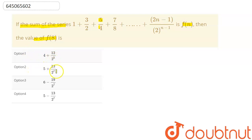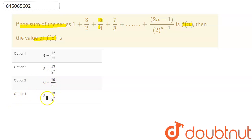option 2 is 5 + 13/2^7, option 3 is 6 − 19/2^7, and option 4 is 5 − 13/2^7. So we have Sₙ equal to this series.